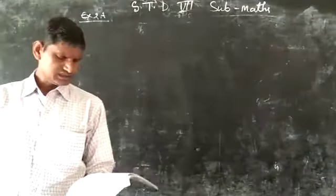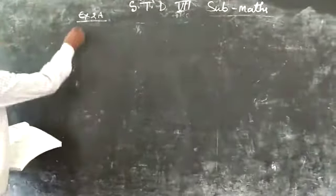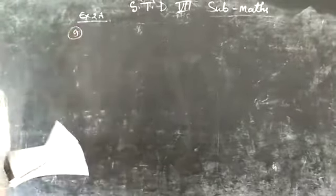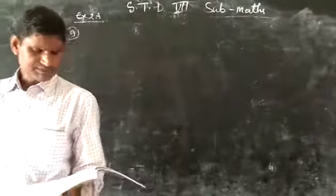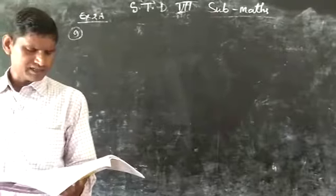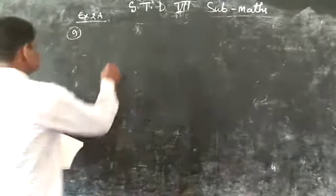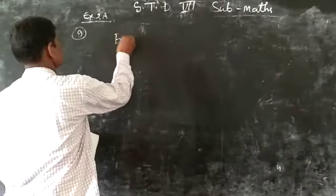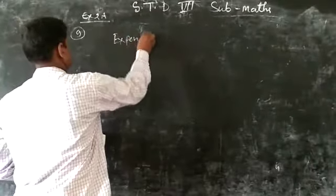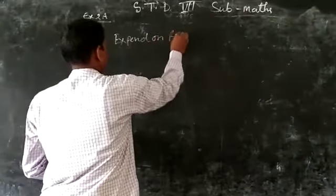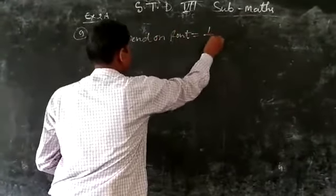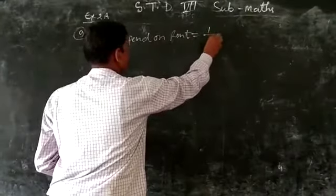Today I will tell you exercise question number 9. The problem is: Rasmi spent 1 upon 5 of her income on rent. Spent on rent, 1 upon 5.